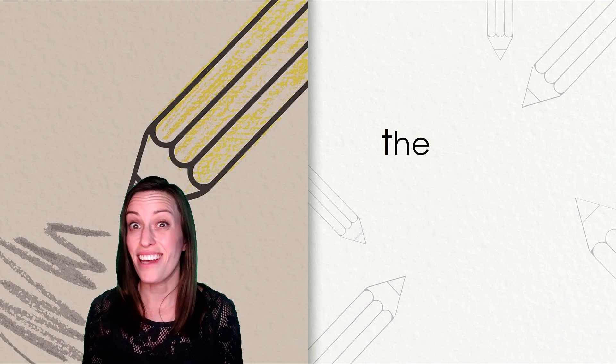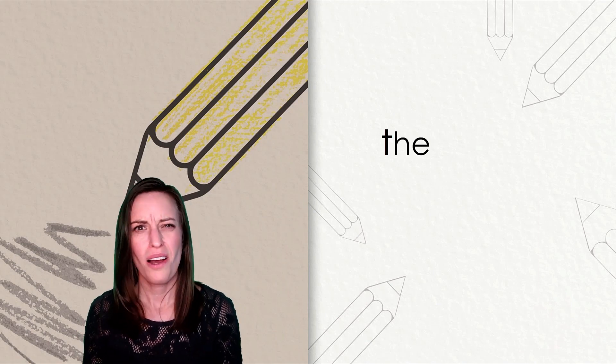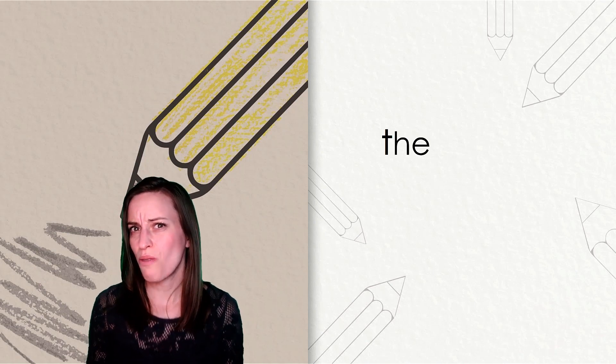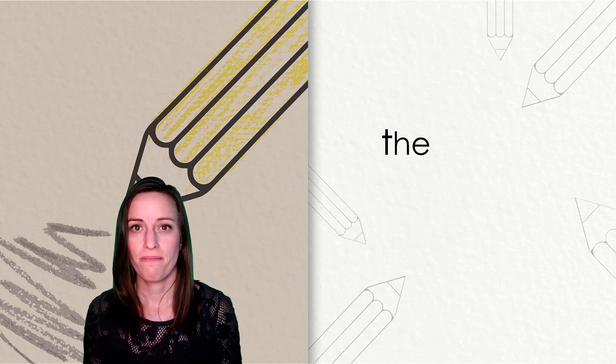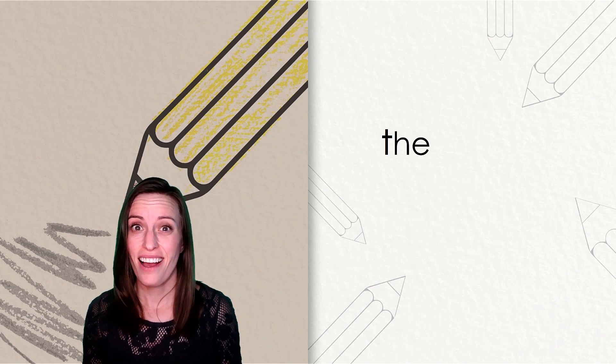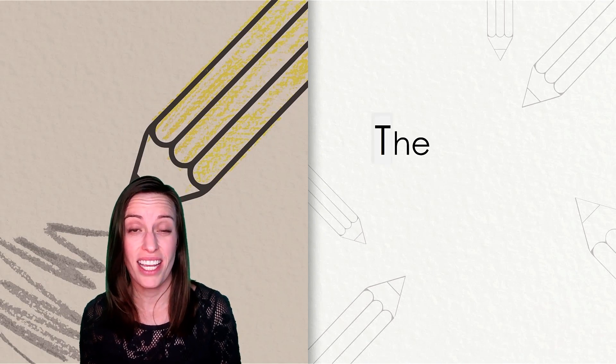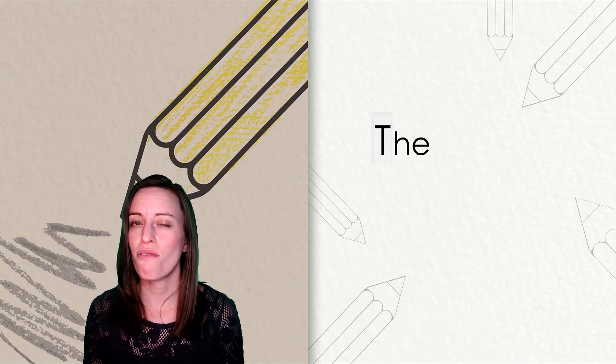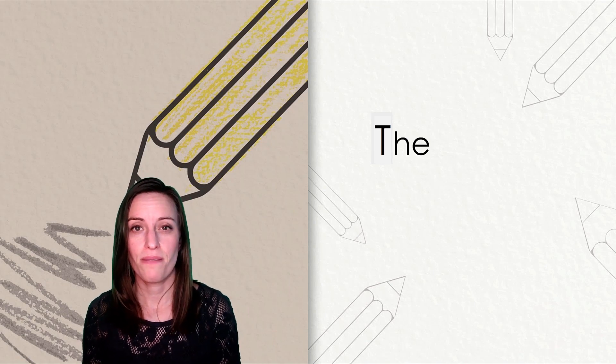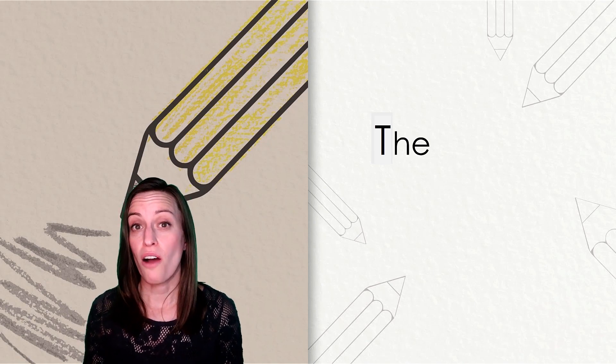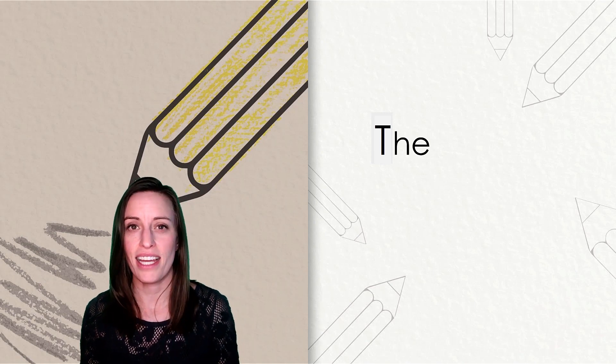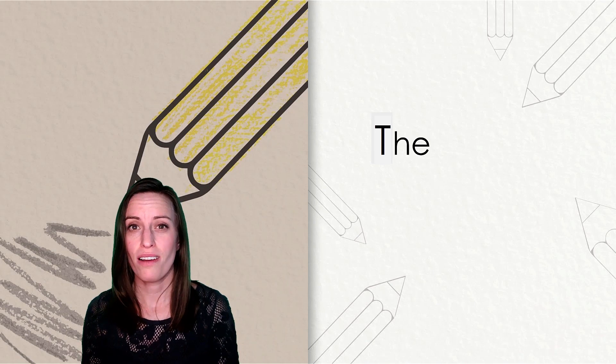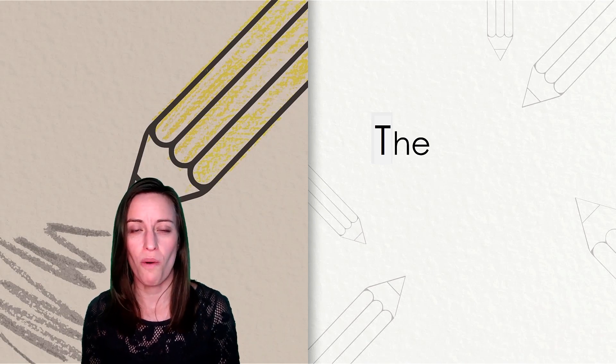That's right. The word the is a high frequency word. When you look at that word, what do you notice? What do I need to fix? You're right. I need to change that lowercase t to an uppercase t because the is the first word in our sentence. The robin is flying.